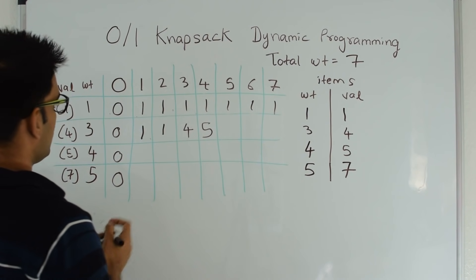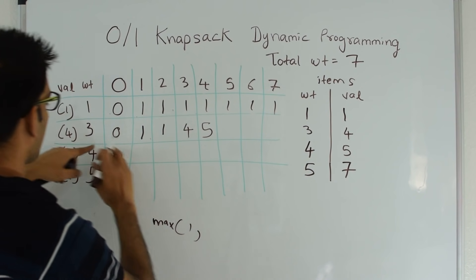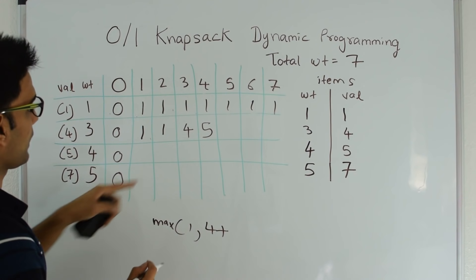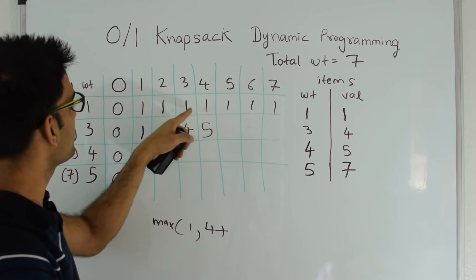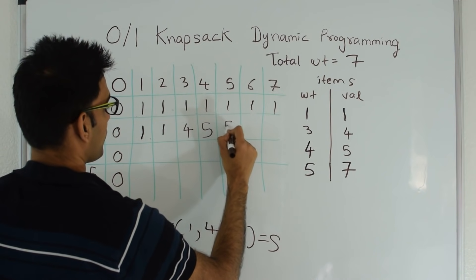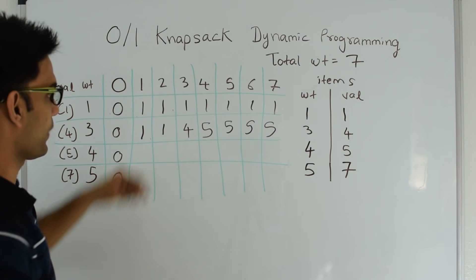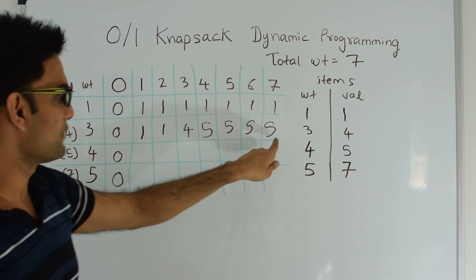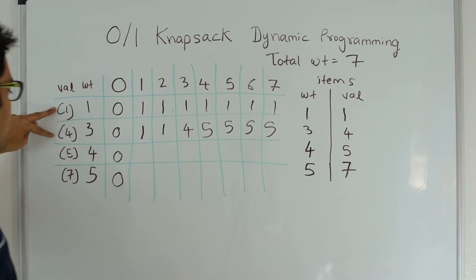For the remaining columns in this row, we keep checking: value of item 3 is 4 plus going 3 steps back in the same row above. This gives 5 all the way to the end. So if the total weight is 7 and we have 2 items — weight 1 and weight 3 — the maximum value we can get is 5, which corresponds to selecting both items.